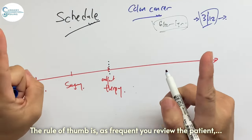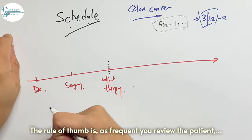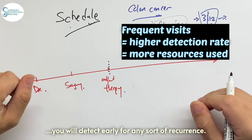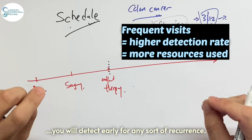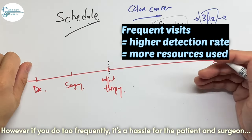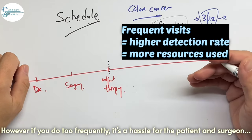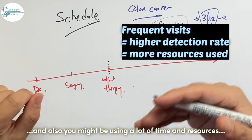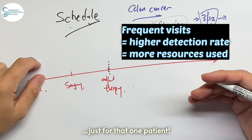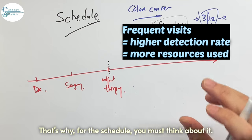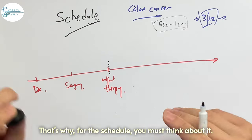The rule of thumb is, as frequently you review the patient, you will detect early for any sort of recurrence. However, if you do too frequently, it's a hassle for the patient and the surgeons. And also you might be using a lot of time and resources just for that one patient. So that's why the schedule you must think about it.